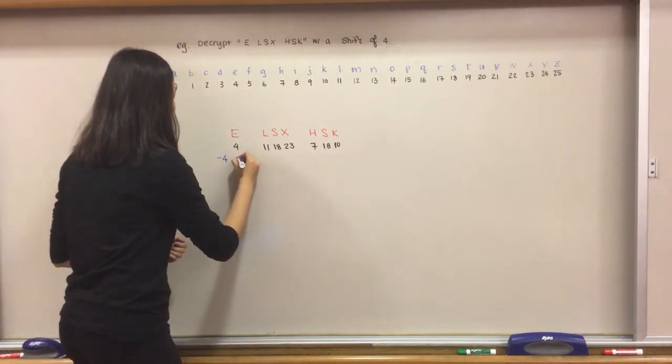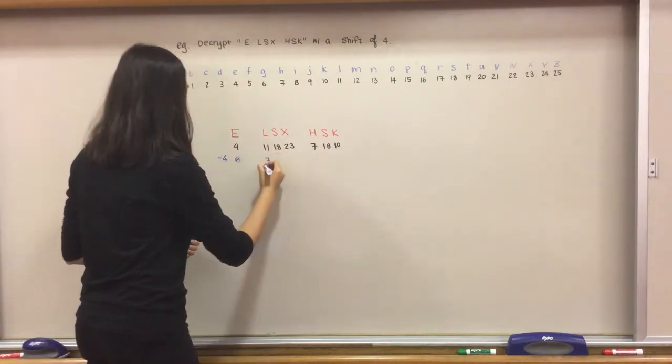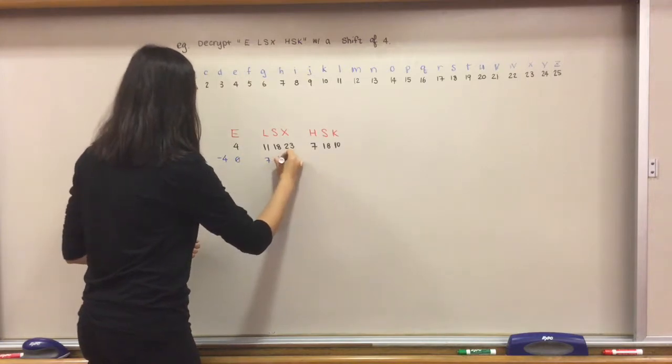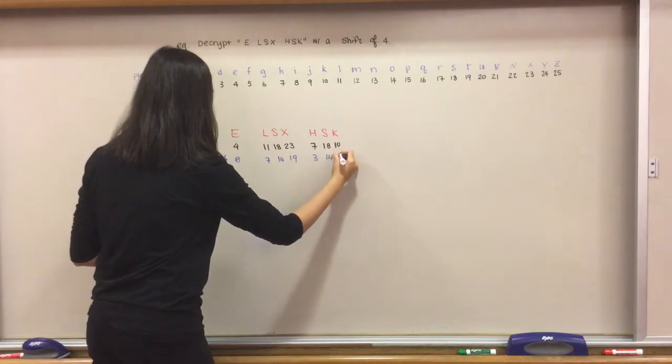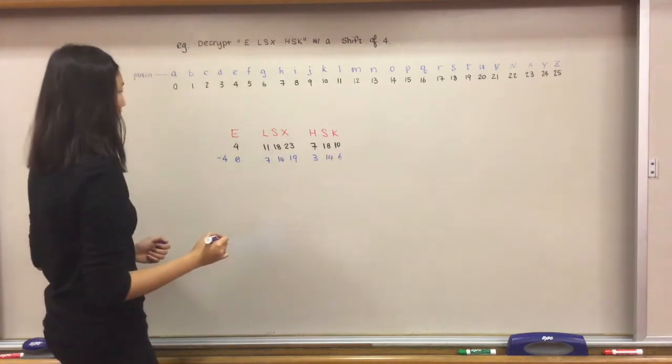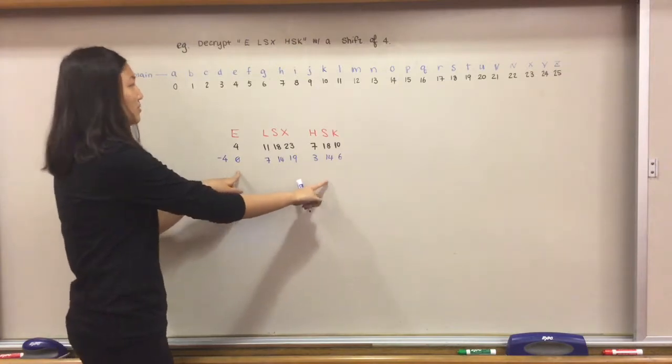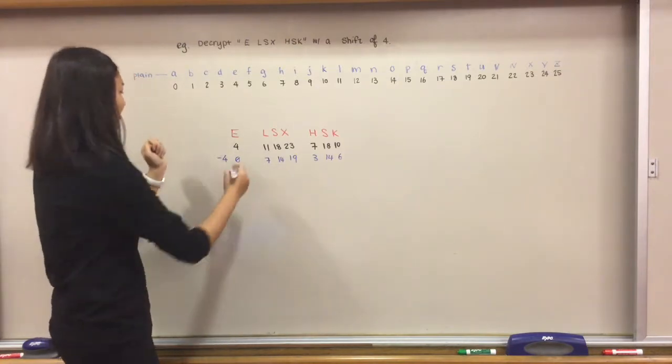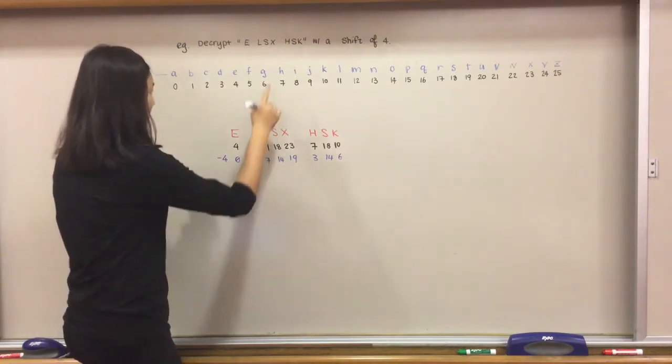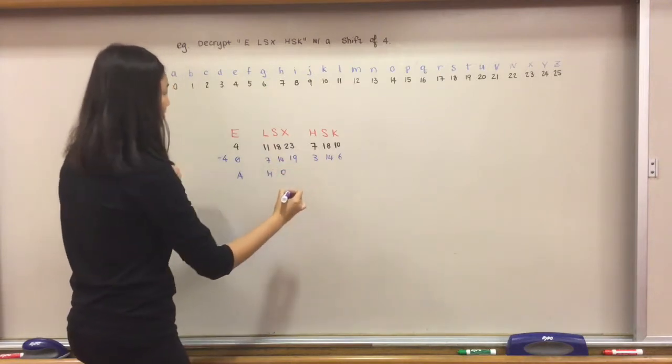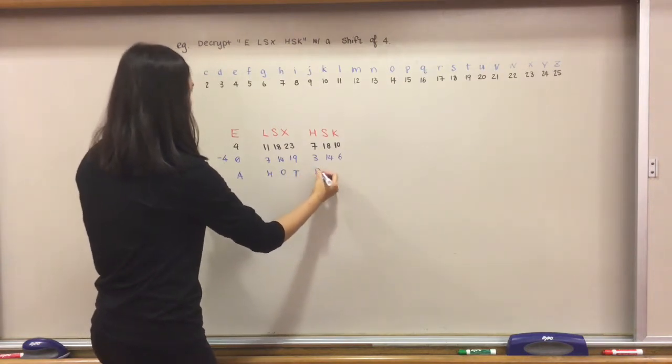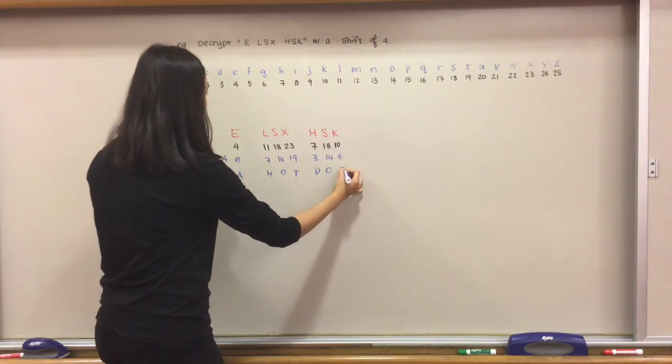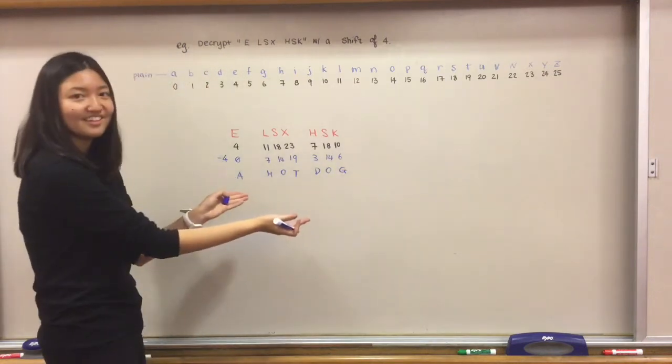We map these new numbers back to letters again. That'll be A, 7 is H, 14 is O, 19 is T, 3 is D, 14 is O, and 6 is G. A hot dog. Boom, so quick.